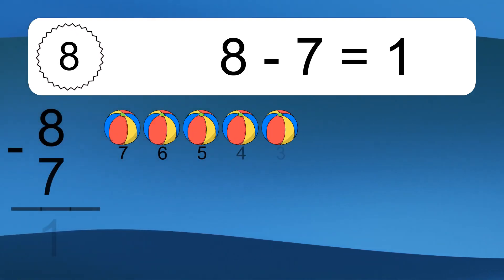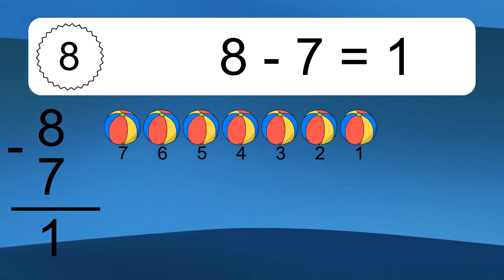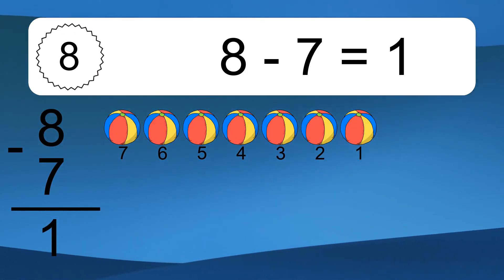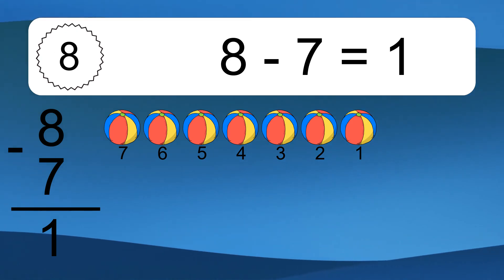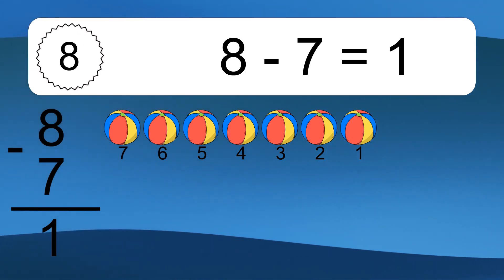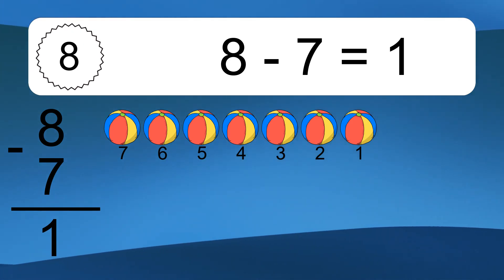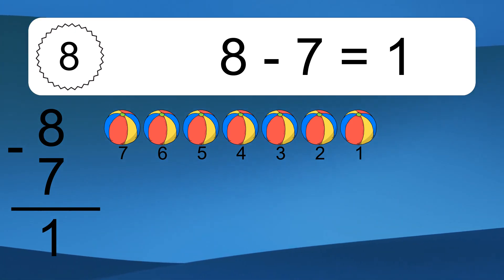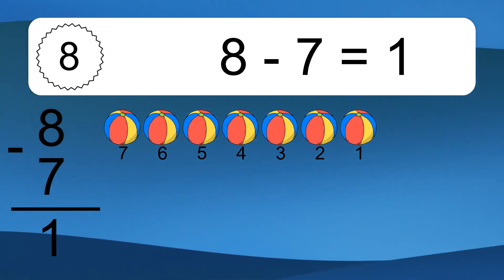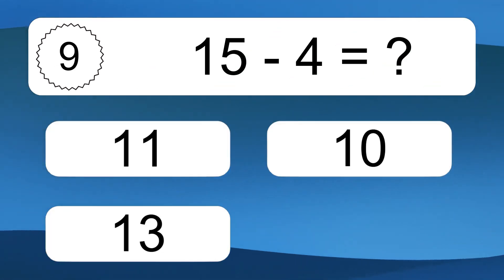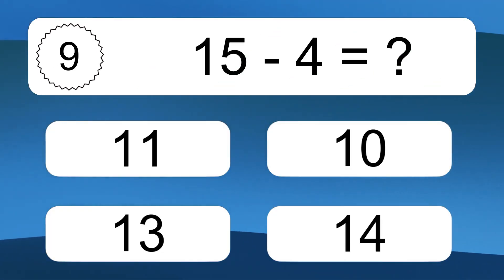8 minus 7 equals what? 8 minus 7 equals 1. Let's count it: 7, 6, 5, 4, 3, 2, 1.